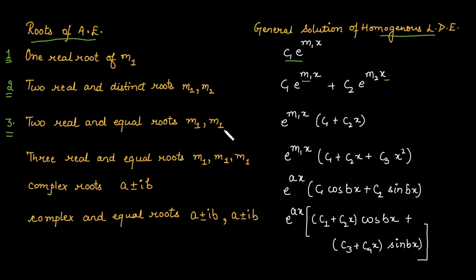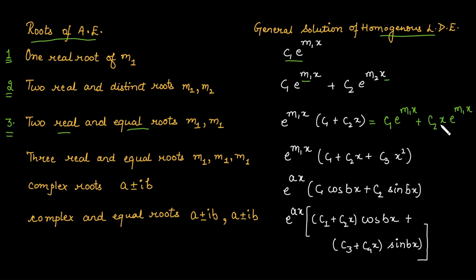The third case is when two roots are real and equal. In that case the solution is written as e^(m1·x) multiplied by (c1 + c2·x), which can also be written as c1·e^(m1·x) + c2·x·e^(m1·x). We include the factor x to ensure linear independence; without it, c1 + c2 would just be a single constant, giving only one solution for a second-order equation.